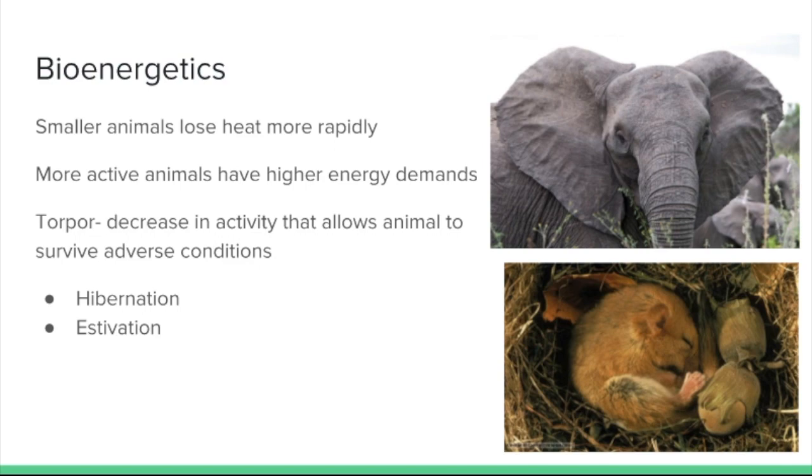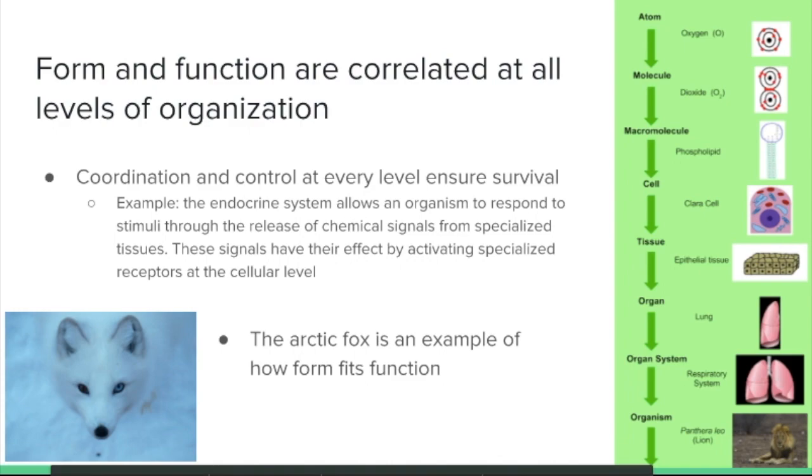Estivation you may not be familiar with, but that's really similar to hibernation. It's just going to be more in the summer months. And so if temperatures are too hot and perhaps too dry, then again organisms can go into a decreased activity, a decreased metabolic state that allows them to survive.